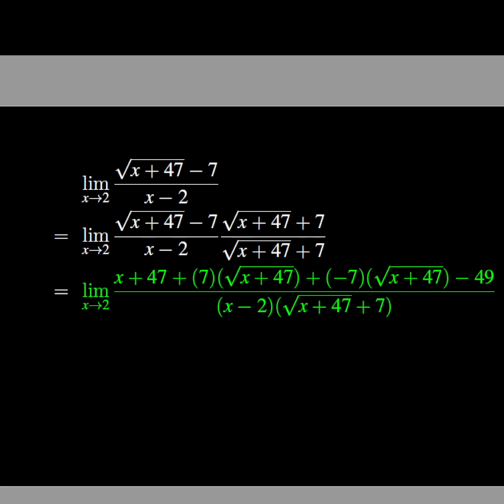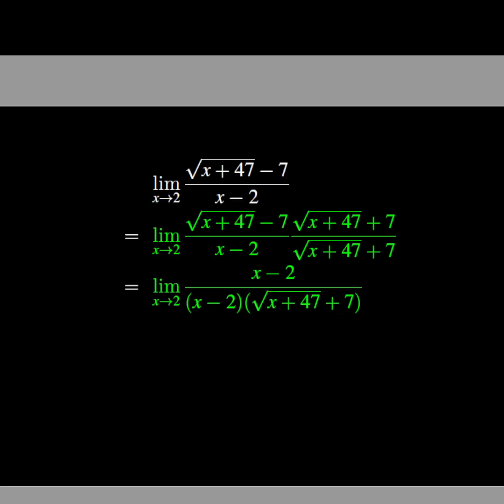The new expression is (x + 47 + 7√(x+47) - 7√(x+47) - 49) over ((x - 2)(√(x+47) + 7)).